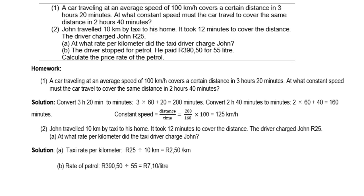A car travels at an average speed of 100 kilometers per hour and covers a certain distance in 3 hours and 20 minutes. At what constant speed must a car travel to cover the same distance in 2 hours and 40 minutes? Convert 3 hours 20 minutes to minutes: 3 times 60 plus 20 equals 200 minutes. Convert 2 hours 40 minutes: 2 times 60 plus 40 equals 160 minutes. The constant speed is distance over time: 200 over 160 times 100, which gives 125 kilometers per hour.